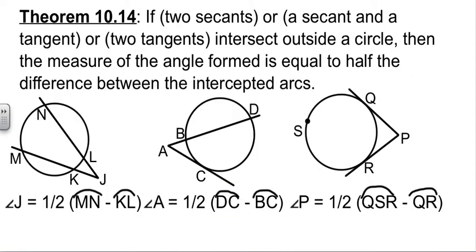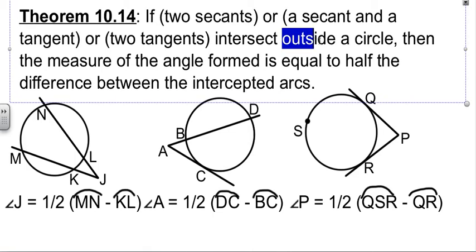So we've looked at what happens when they intersect on the circle. Our next theorem really is kind of like three theorems all in one. They all deal with, all the options deal with, things intersecting outside the circle. Don't let the verbiage up here bother you. The key word is this one.